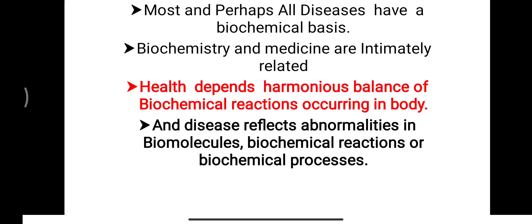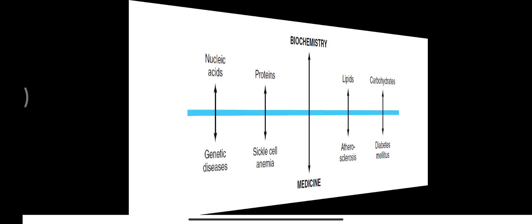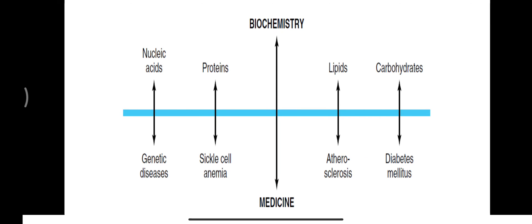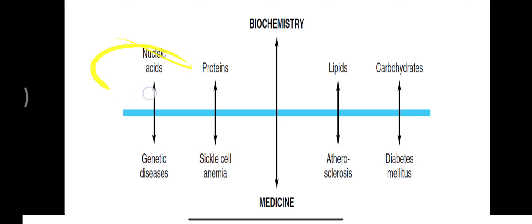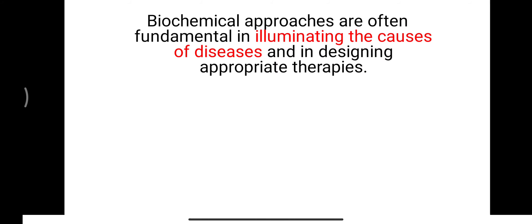Simply, what you will learn in medical biochemistry is the normal molecules and their normal reactions, and when those normal reactions are not occurring properly, that is reflected in the form of disease. This connection between biochemistry and medicine is shown in this chart: carbohydrates are connected with diabetes mellitus, lipids with atherosclerosis, proteins — if abnormally produced — can lead to diseases like sickle cell anemia, and nucleic acids, if abnormal, can lead to genetic diseases. Biochemical approaches help identify the cause of disease and design appropriate therapy.